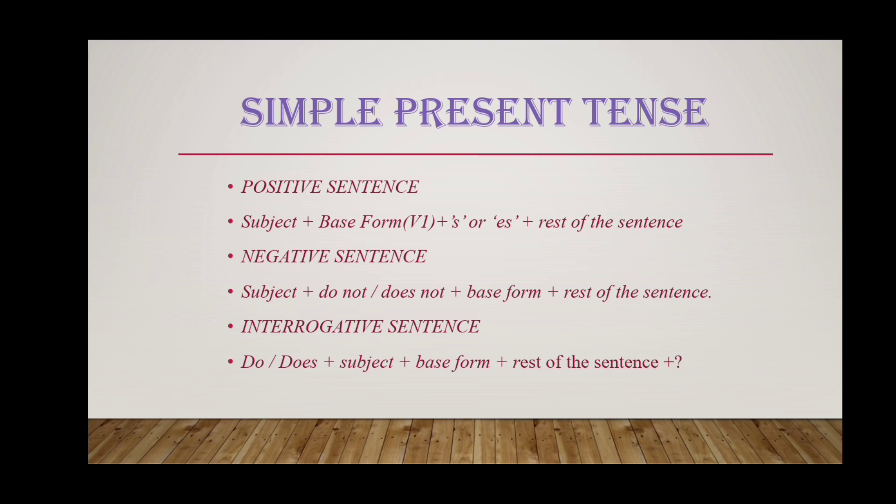For a negative sentence: subject plus do not or does not plus V1 or the base form of the verb plus object. For an interrogative sentence: do or does plus subject plus base form plus object and a question mark. That is the structure of simple present tense.